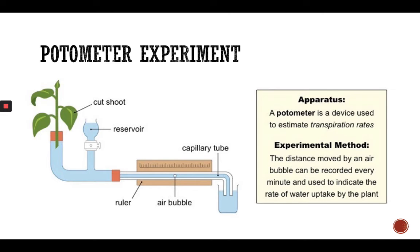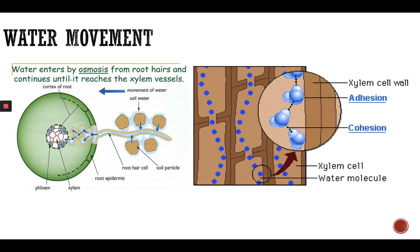Here we have the potometer experiment. It's the apparatus used to estimate transpiration rate. We take a leafy shoot fitted tightly through a hole in a rubber stopper. There is a reservoir and a graduated capillary tube, and a bubble in the capillary tube marks the zero point. As the plant takes up water, the bubble will move along the capillary tube, and the progress of the bubble can be monitored by recording its position over time.